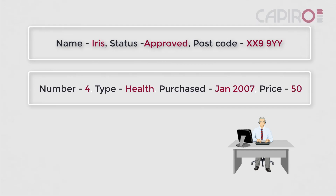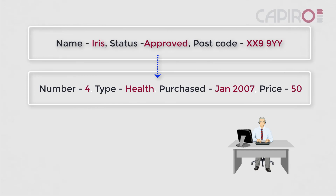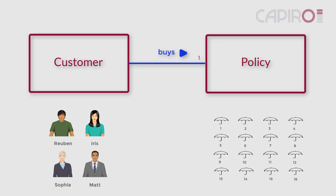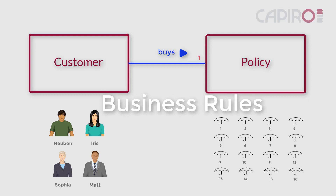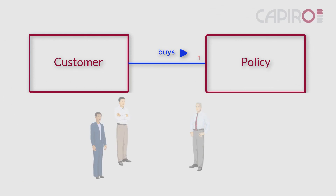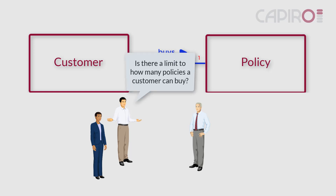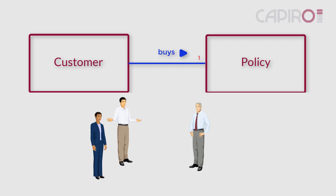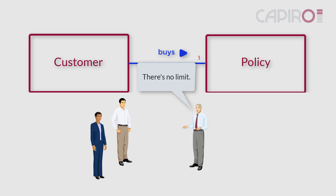We see that the computer system has given her policy the number 4. The computer system links her customer record with her policy record — we won't worry about how it does this; that's not our job. The analysts know that the minimum number of policies a customer must buy is 1. They now need to know if there's an upper limit. Theo tells them that customers can buy as many policies as they want. We show this on the model by inserting a star or asterisk after the number 1. The star means there's no upper limit on the number of policies that one customer can buy.